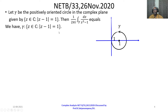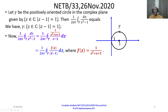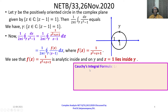We have gamma, the circle with center 1 and radius 1. Now 1 over 2πi times the integral around gamma of dz over z cubed minus 1 can be written as 1 over 2πi times the integral around gamma of [1/(z² + z + 1)] over (z − 1) dz. That equals 1 over 2πi times the integral around gamma of f(z)/(z − 1) dz, where f(z) = 1/(z² + z + 1). We see f(z) is analytic — regular inside and on gamma — since its poles lie outside gamma. And z equals 1 lies inside gamma.